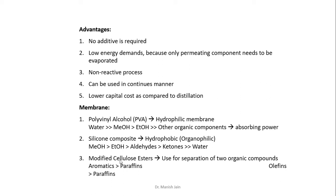The third type of membranes are organophilic membranes used for organic-organic separations, like modified cellulose ester membranes. These membranes are used for aromatic-paraffinic separations like toluene and heptane separation, or olefinic-paraffinic separations like n-heptane and heptene separation.